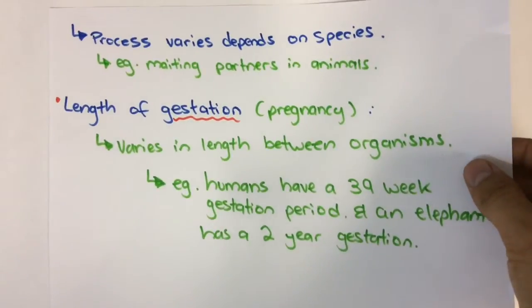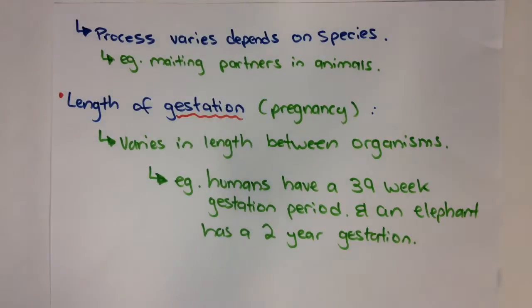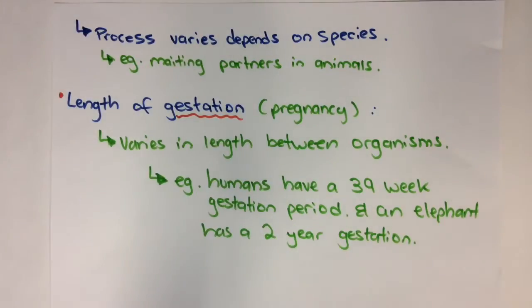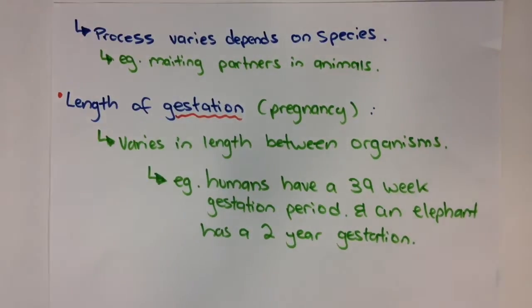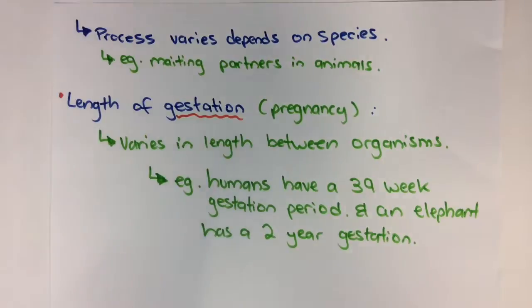The processes of reproducing vary quite differently between species. The way some animals mate is different to others, to match their anatomy and physiological needs.